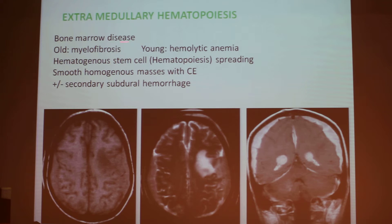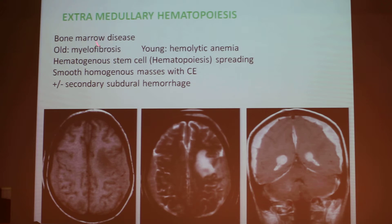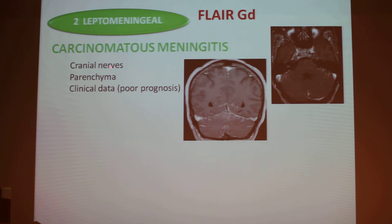So when you have a patient with myelofibrosis or hemolytic anemia and you have these imaging findings, think of extramedullary hematopoiesis. It's very important.